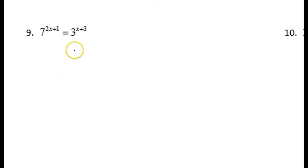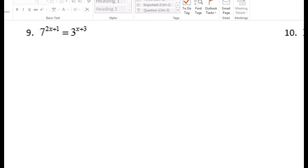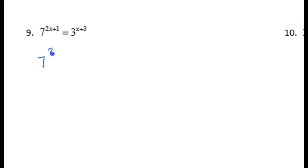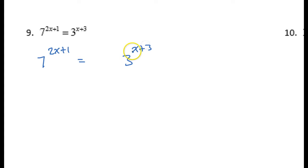In this video, I will show you how to solve exponential equations when the bases are completely different and they cannot be made into the same thing at all. I'm going to need a little bit more space for this, so I'm going to write 7 to the 2x plus 1 power is equal to 3 to the x plus 3 power.